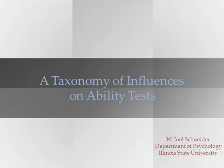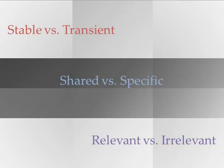I'd like to talk about a taxonomy of influences on ability tests. Notice that it's a taxonomy, not the taxonomy. There are many different ways that we could talk about different influences — this is just one. The taxonomy I'd like to talk about involves three dimensions: stability, specificity, and relevance.